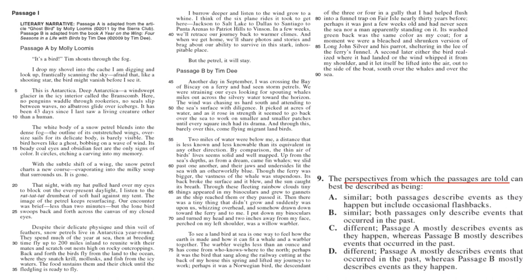Number nine: the perspective from which the passages are told can best be described as what? Glancing at the answers, we're looking at past or present tense. Passage A says 'This is Antarctica... it has been 43 days... the petrel blends' — that is present tense, so we eliminate B and D, which indicate passage A is in past tense. Passage B says 'I was crossing... the two miles of water were below me... I turned my head' — that's past tense. So passage A is present tense and passage B is past tense. The answer is C.